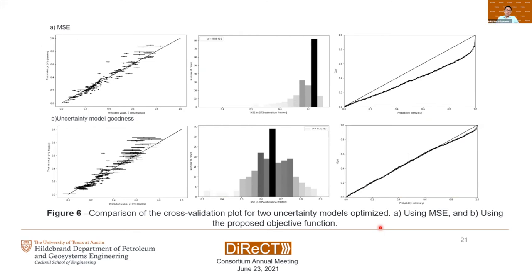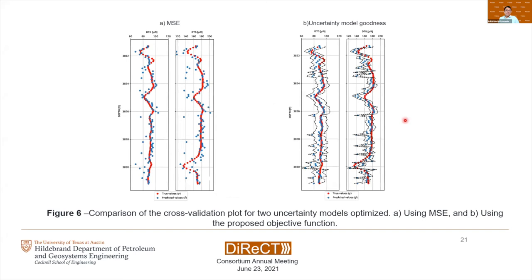Figure 6 is a summary comparison of the cross-validation plot for two uncertainty models. The first model uses mean square error for hyperparameter tuning, and the second model uses the uncertainty model goodness metric. Both models have high cross-validation scores in testing, but using uncertainty model goodness results in an improved uncertainty model, as we can check with the accuracy plot for both models. On the left we have the single estimates from a model trained with mean square error, and on the right we have the uncertainty model trained using the uncertainty model goodness. Instead of predicting a single estimate at each step, we predict the entire uncertainty distribution with accuracy and precision.